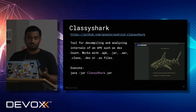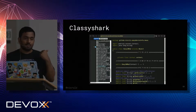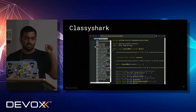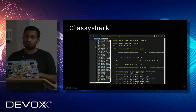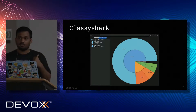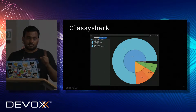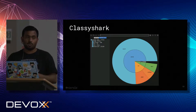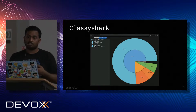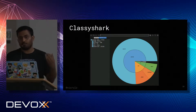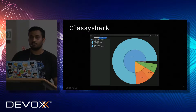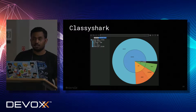Classy Shark shows all classes and methods being used. When you load up an application, it decompiles all classes and shows a list of all libraries it's using. It also has a super nice method count feature — similar to the deprecated method count plugin in Android Studio. You can show all dependencies with DEX count and method counts in a nice graph. I still use it even when using Android Studio to check the graph for bigger projects.